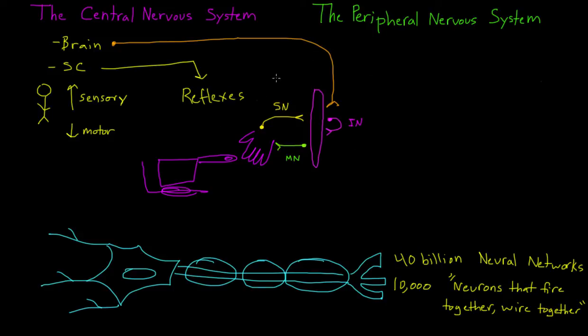Thinking about this can help us understand another part of the central nervous system, which is what would happen if the connections between the brain and the spinal cord were severed. Let's say that we have a brain here and our spinal cord down here. Imagine what would happen if an accident occurred and these connections were severed.